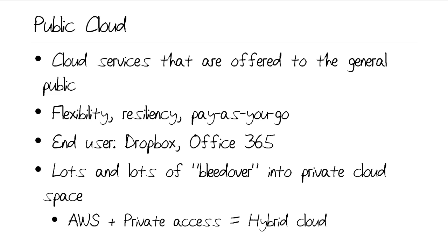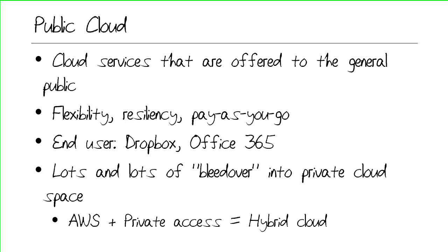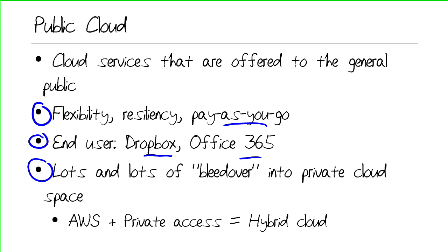The first cloud type is easiest to understand: the public cloud. These are cloud services that are offered to the general public. We turn to cloud services most typically because of their flexibility, their resiliency, their geographic distribution, and the fact that we generally can just pay for the services we need. End-user public cloud services include things like Dropbox, Office 365, and Google Apps.